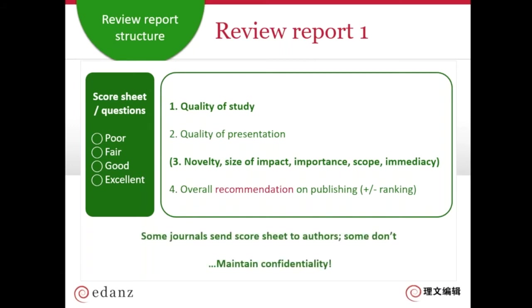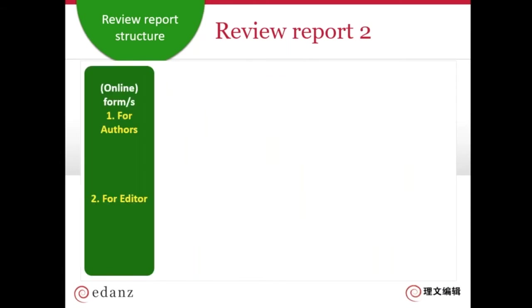Some journals send this score sheet to the authors and some don't, but your job as the reviewer is to keep to the deadline and keep everything confidential. The second part of a report — or for some journals the only part — is a form: it could be a Word document or an online form that you enter into an online system, and this has two parts usually.